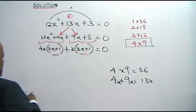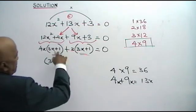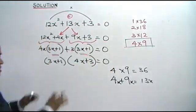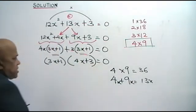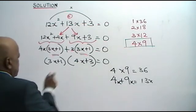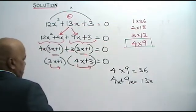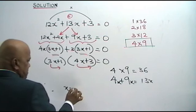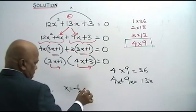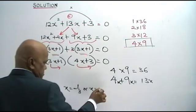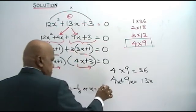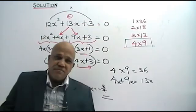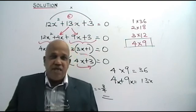We take out the common factor 3x plus 1. What is left? 4x plus 3. Equal to 0. From here, 3x plus 1 equals 0 or 4x plus 3 equals 0. Bring the 3 down: x equals negative 1 over 3. Or bring the 4 down: x equals negative 3 over 4. These are your answers for x. I hope you get it — don't worry, there are more examples.